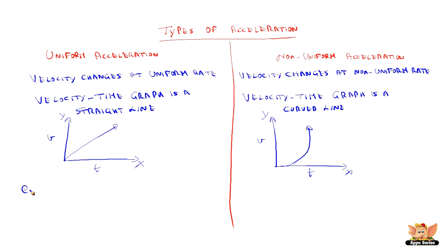For example, uniform acceleration includes a freely falling body or a ball rolling down an inclined plane.